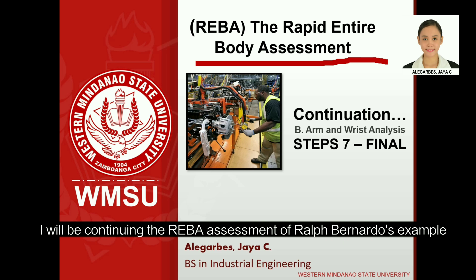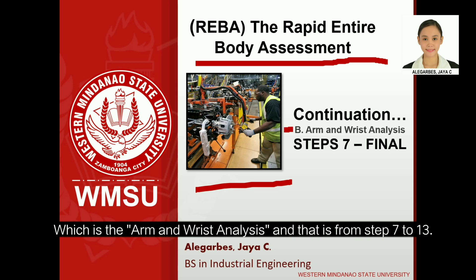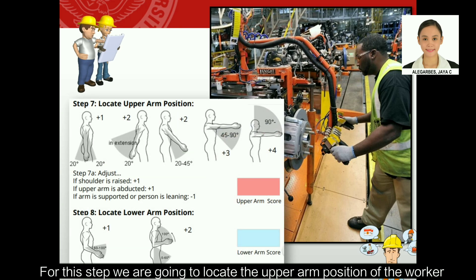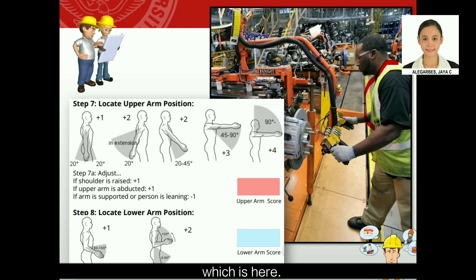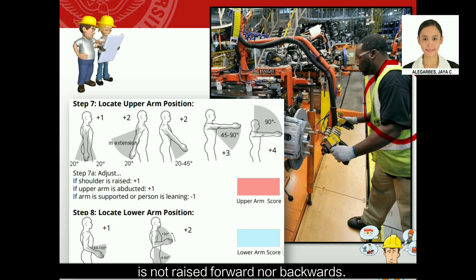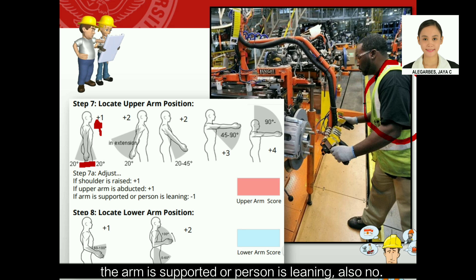Continuing the REBA assessment, Part B covers arm and wrist analysis from steps seven to thirteen. Step seven locates the upper arm position. The upper arm is not extended, not raised forward nor backward, within the range of 20 degrees, so we give it a plus one. For adjustments: shoulder is not raised, upper arm is not abducted, and the upper arm is not supported, so we only have plus one.